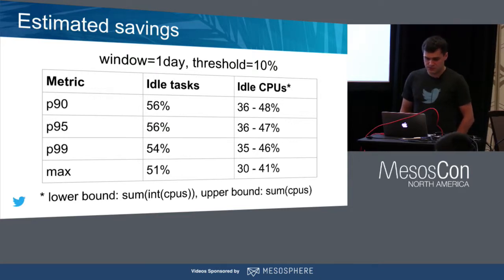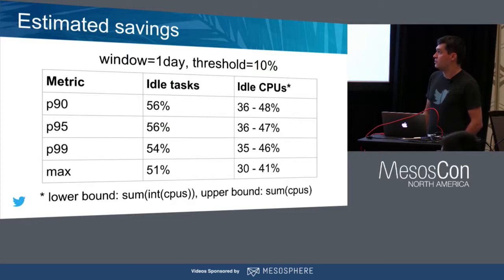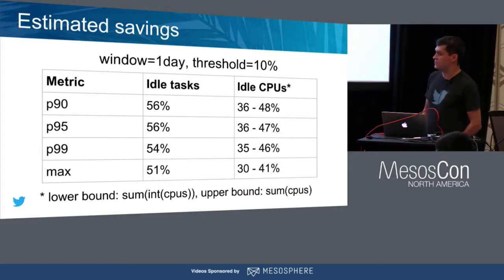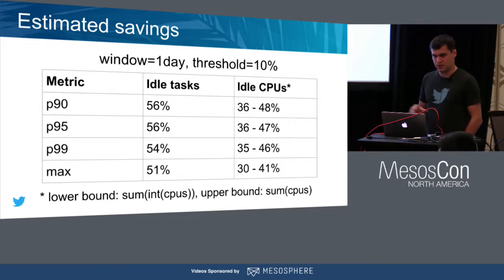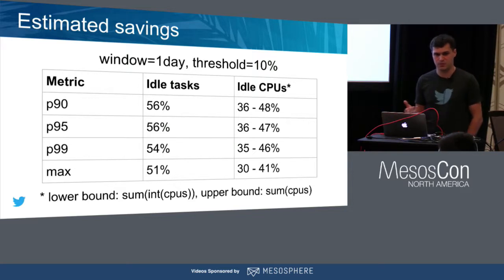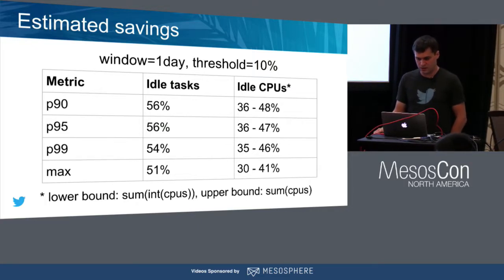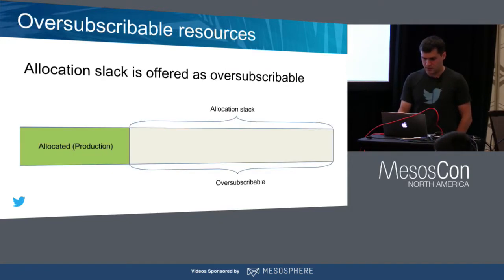Based on our data, we made some estimations. Using different metrics, we found that more than 50% of tasks are idle. Using different methodologies to estimate idle CPUs, we came up with 30 to 50% of idle CPUs. The lower bound is based on summing idle CPUs available, and the upper bound is the sum of all CPUs available.